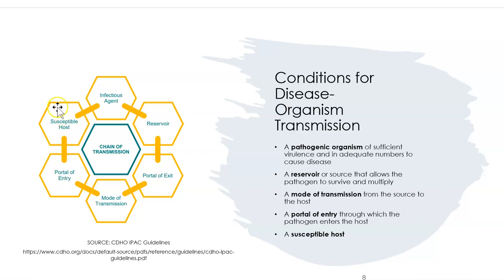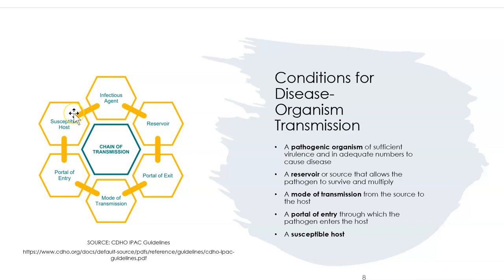Finally, you must be a susceptible host — the person who gets sick next. This could be babies, children, seniors, or people with a weak immune system. With COVID, it could be anyone. A susceptible host is someone at risk for getting sick.